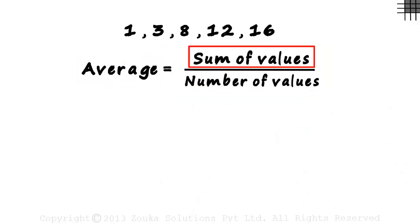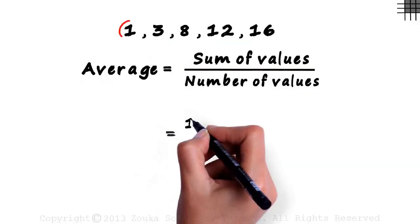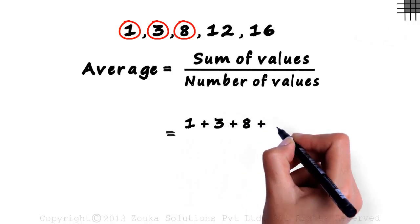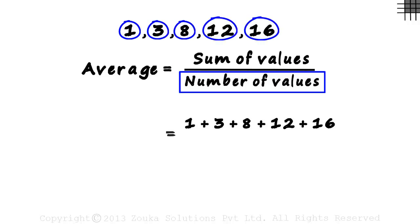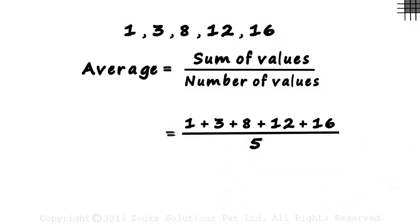Look at the numerator first, the sum of the values. Sum of these values would equal 1 plus 3 plus 8 plus 12 plus 16. And how many values do we have here? 1, 2, 3, 4, and 5. Five values. We divide the numerator by 5. 1 plus 3 is 4. 4 plus 8 is 12. 12 plus 12 is 24. And 24 plus 16 is 40. So the average would equal 40 by 5, which equals 8.